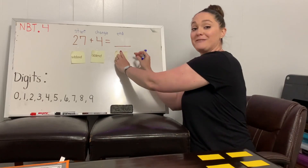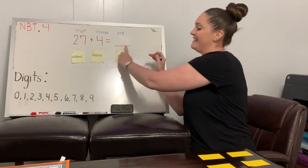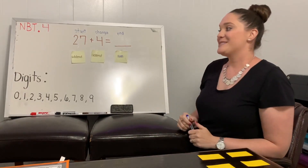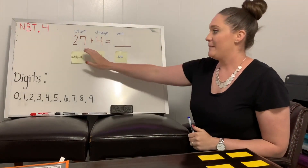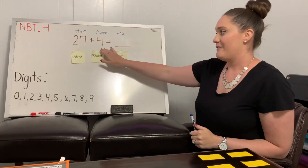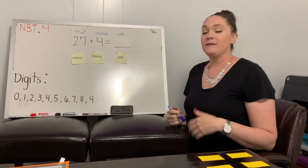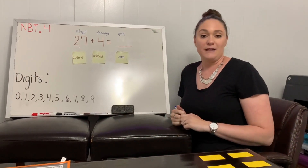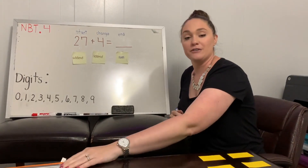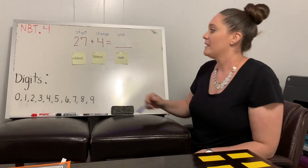It's called the sum. Nice job if you got that! So today, we're going to combine 27 and 4 to find our sum. One of the ways that we can do that is by using your 120 grid.